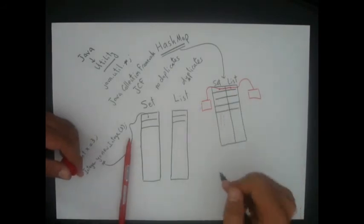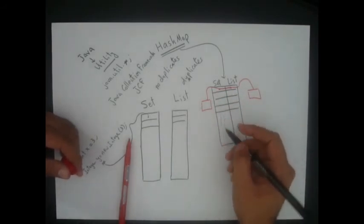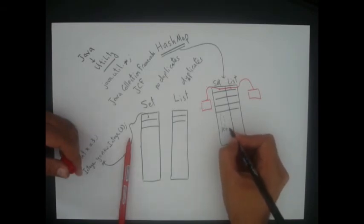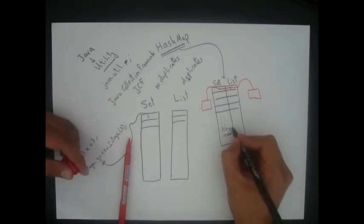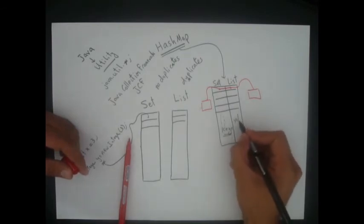However, in the set side, you have only keys because you don't have duplicates. And we could say we have values on the other side.